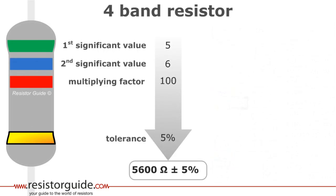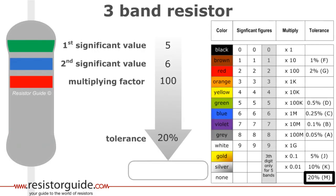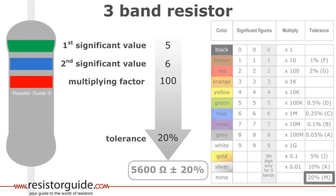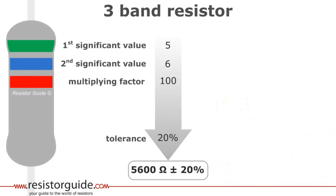If the fourth band is not colored, we have a three band resistor. By looking in the chart, we see that the non-colored band means that the tolerance of the resistor is 20%. The resistance is still the same, but the tolerance has changed.